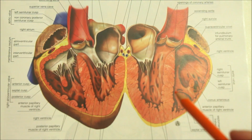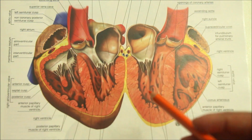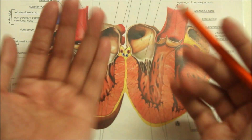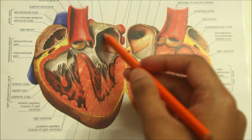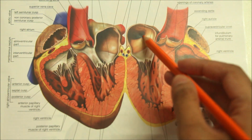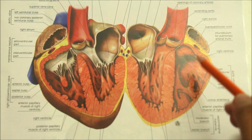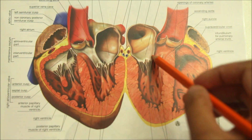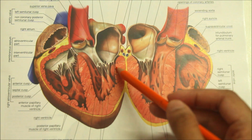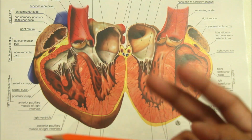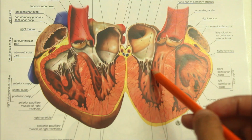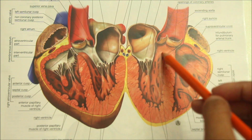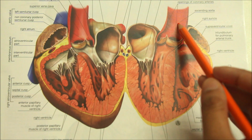Looking at the internal features of the left ventricle through this diagram, internally the left ventricle is divided into two parts: the lower rough part with trabeculae carneae, and the upper smooth part — also known as the aortic vestibule — which gives origin to the ascending aorta. Oxygenated blood enters through the left atrium into the left ventricle and exits through the aorta.